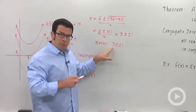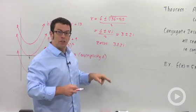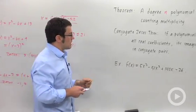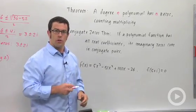And these two zeros, 3 plus and minus 2i, those are conjugate pairs. So the imaginary zeros came in conjugate pairs. That always happens as long as your polynomial has all real coefficients.